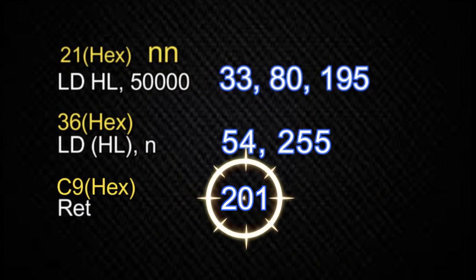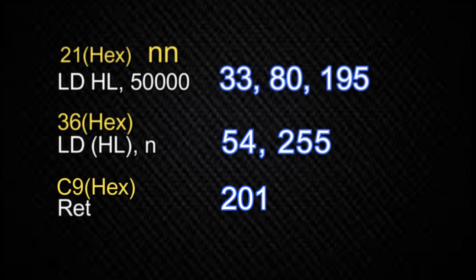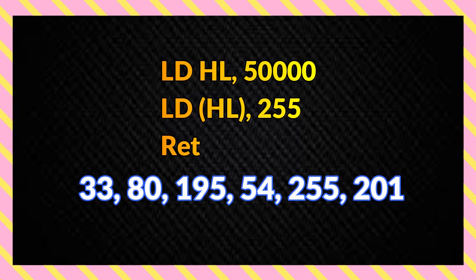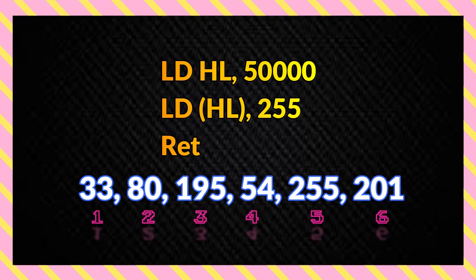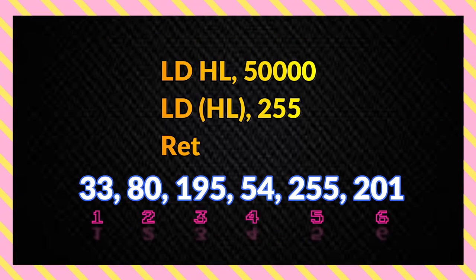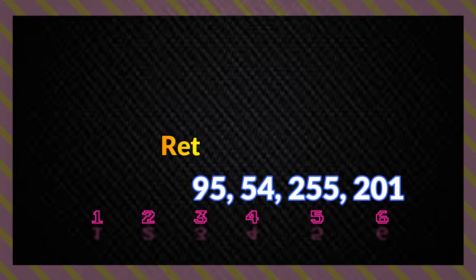We've successfully converted an assembly language program into its equivalent machine code values. In this case we end up with a machine code program that contains six bytes. Now let's take a look at how we can actually get that machine code program into our computer, but first we need to decide where we're going to store it in memory. The next step is to enter those machine codes into the computer's memory so that we can execute them.